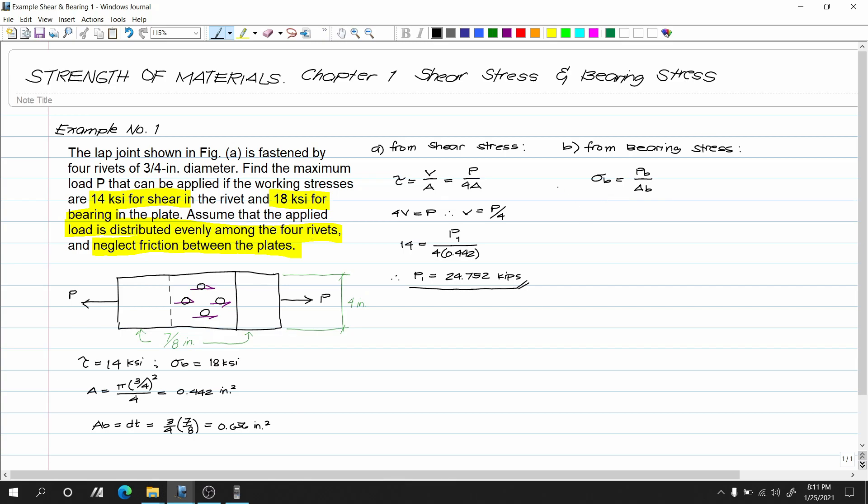And Pb is also four, because we have four contact surfaces properly distributed. So Pb equals 4, which is equivalent to P. Therefore, Pb equals P/4.